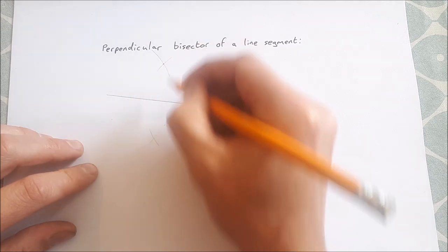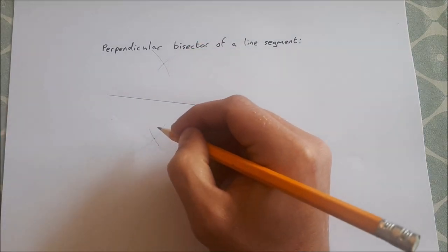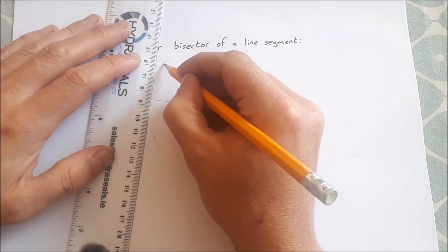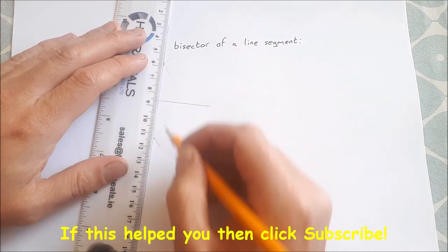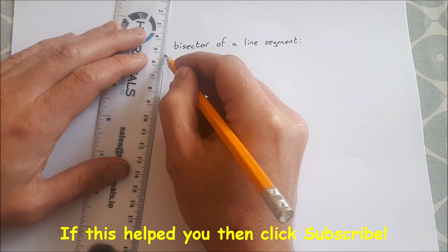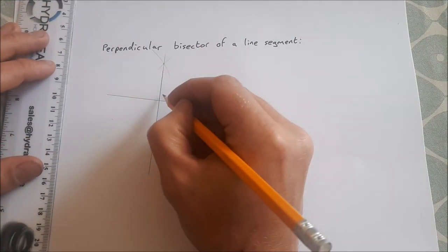And all we do is we join those two points of intersection. Again, be as accurate as you can when you're doing this. Join the two points of intersection like that, and now this line here is perpendicular to our original line and it splits it exactly in half.